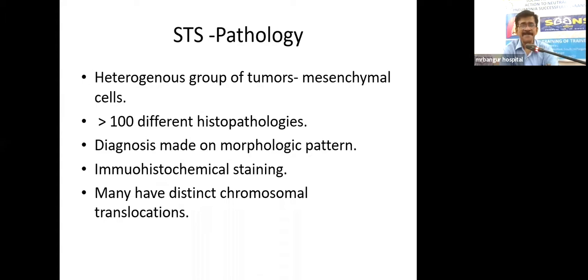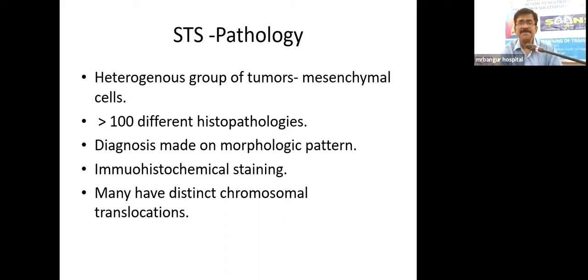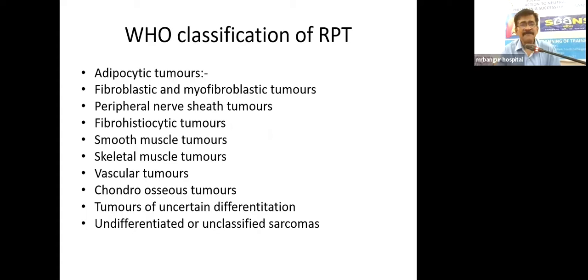Retroperitoneal sarcomas are a heterogeneous group of tumors arising from mesenchymal cells. The WHO classification is very extensive — more than 100 histopathological types have been described. Diagnosis is based on morphologic pattern, immunohistochemical staining, and in some cases chromosomal translocation studies. The broad WHO groups are: adipocytic tumors, fibroblastic tumors, peripheral nerve sheath tumors, fibrous tumors, and some osseous tumors.